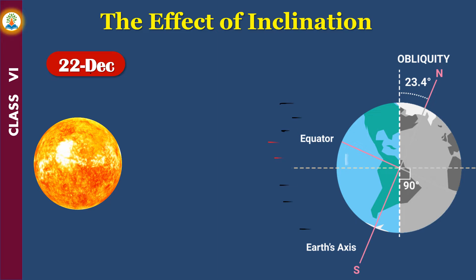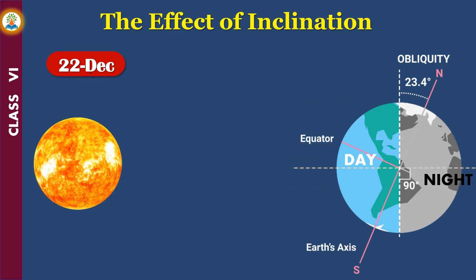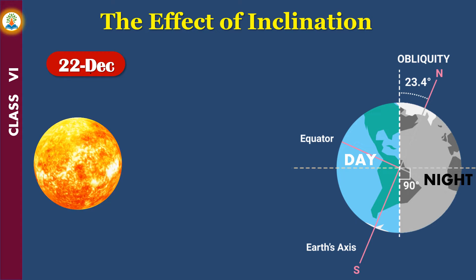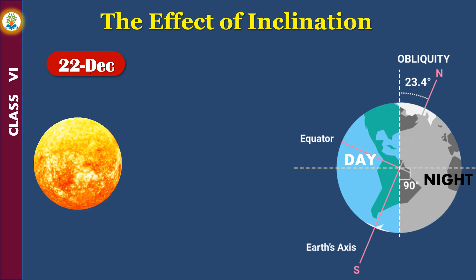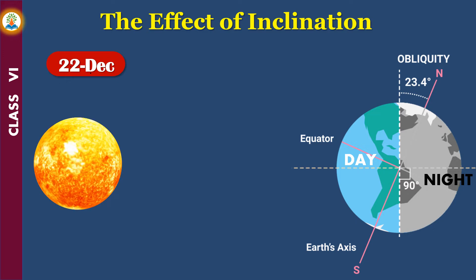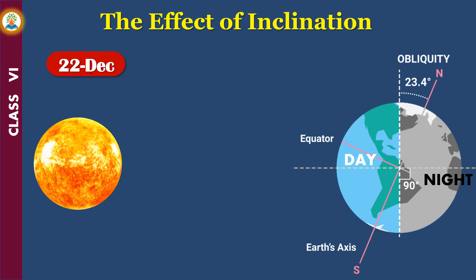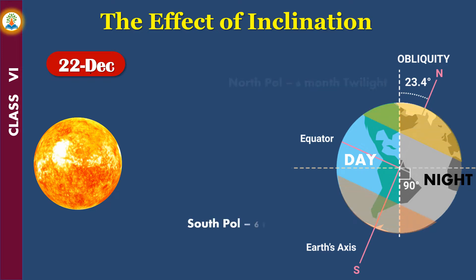On 22nd December, the Southern Hemisphere is inclined towards the Sun. The Sun's rays fall vertically, particularly on the Tropic of Capricorn, so it is summer in the Southern Hemisphere. On the other hand, the Northern Hemisphere is turned away from the Sun and thus receives slanting rays — days are shorter, hence it is winter. On this day, the North Pole is having 6 months of night and the South Pole is having 6 months of daylight.